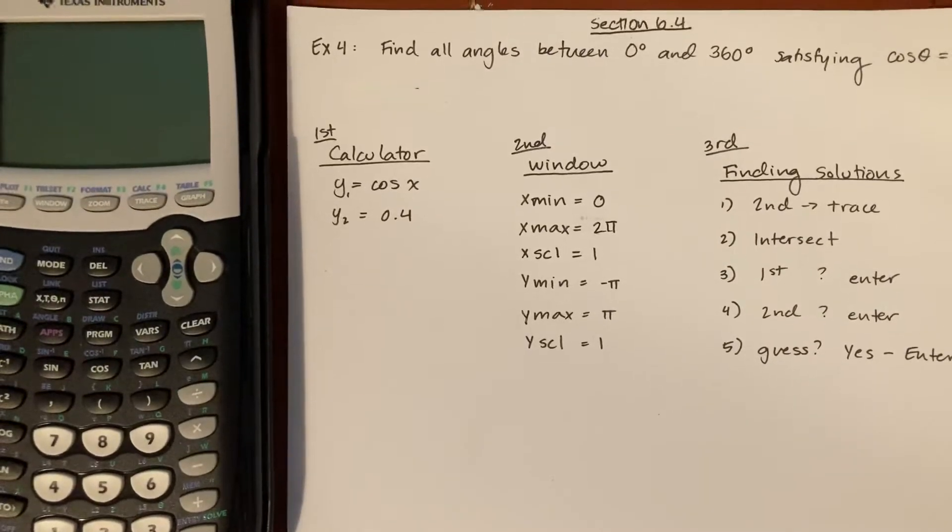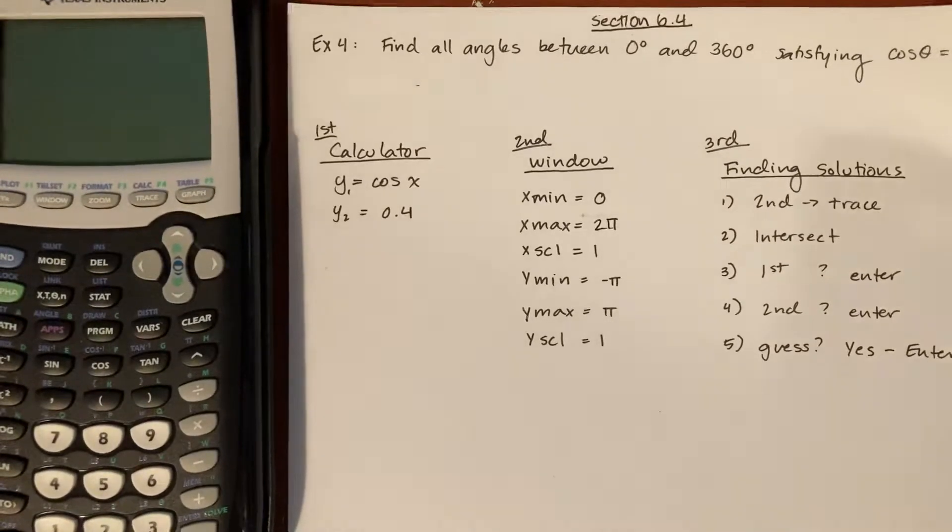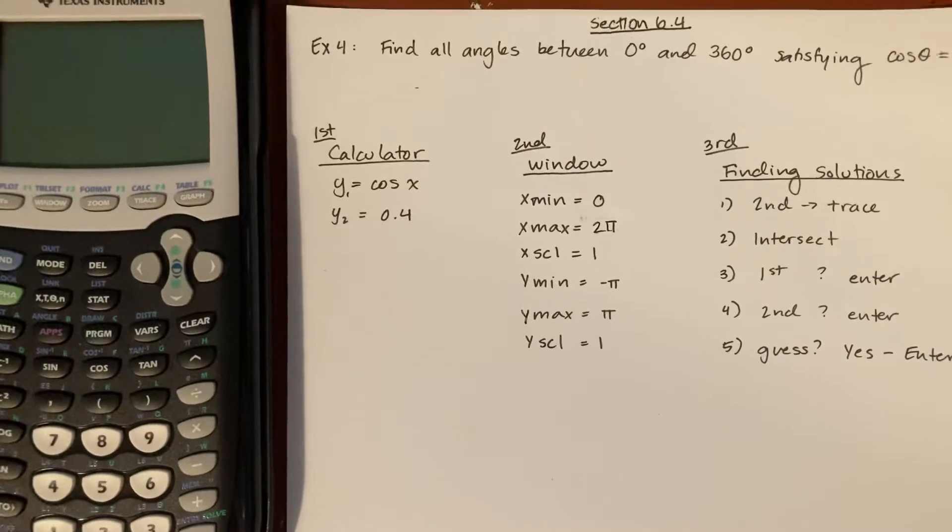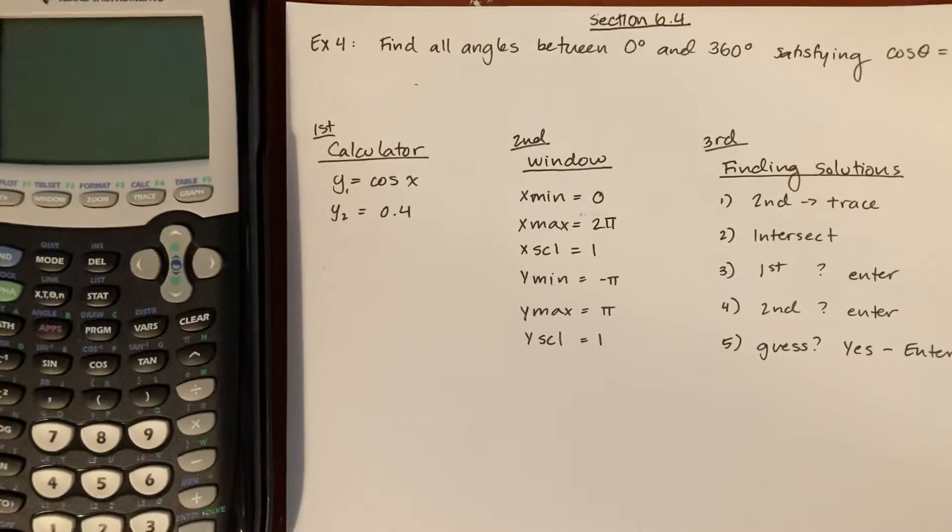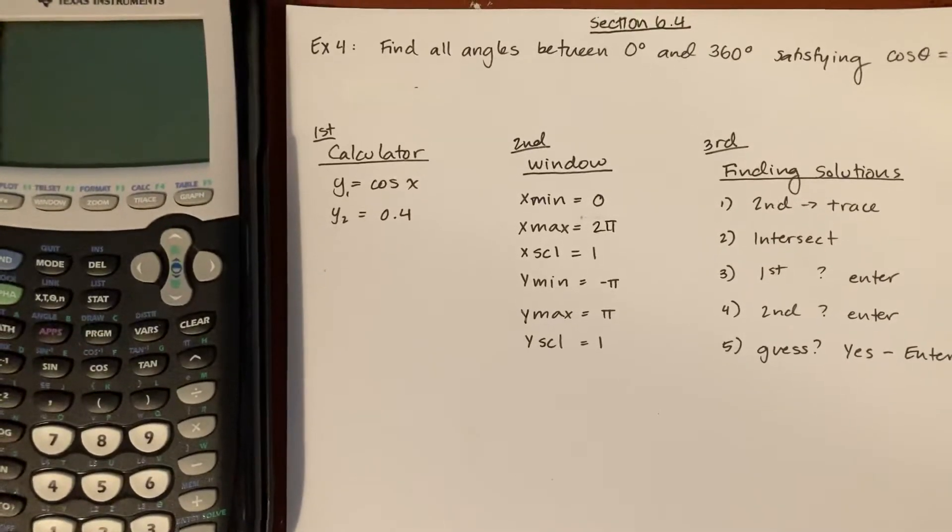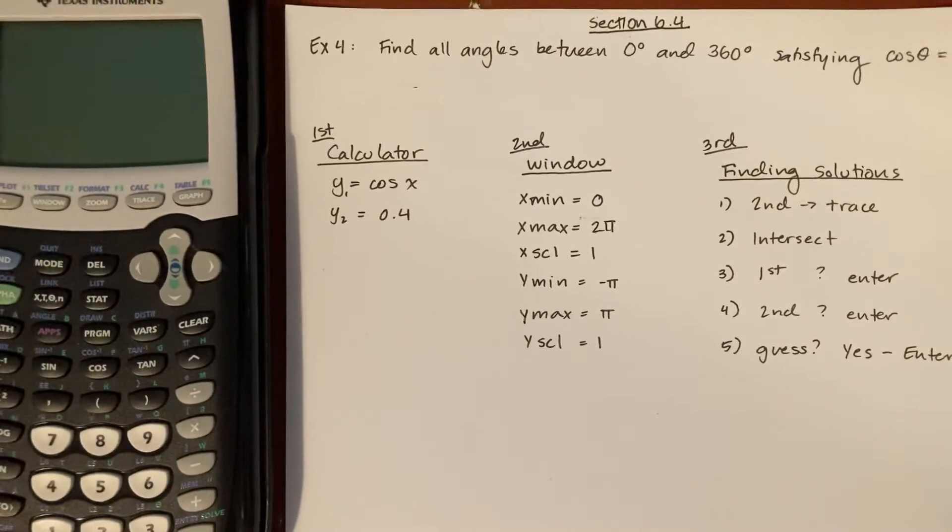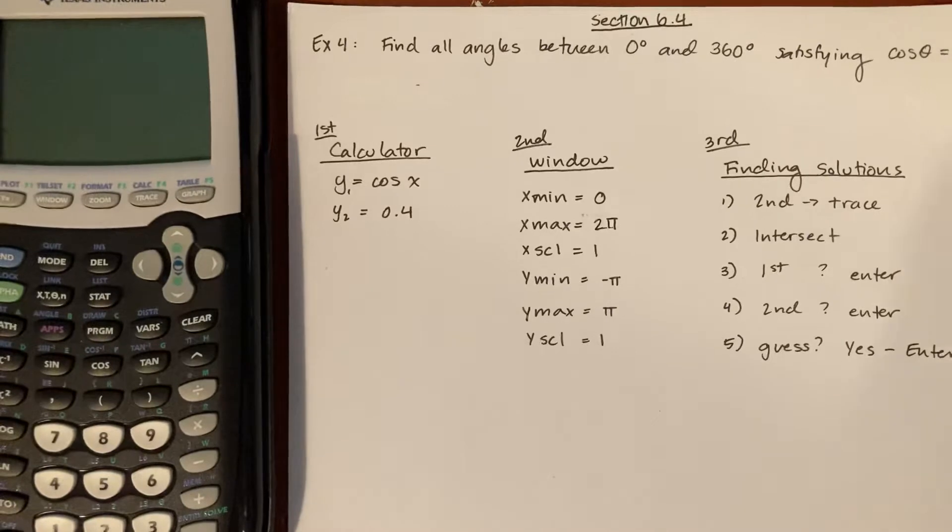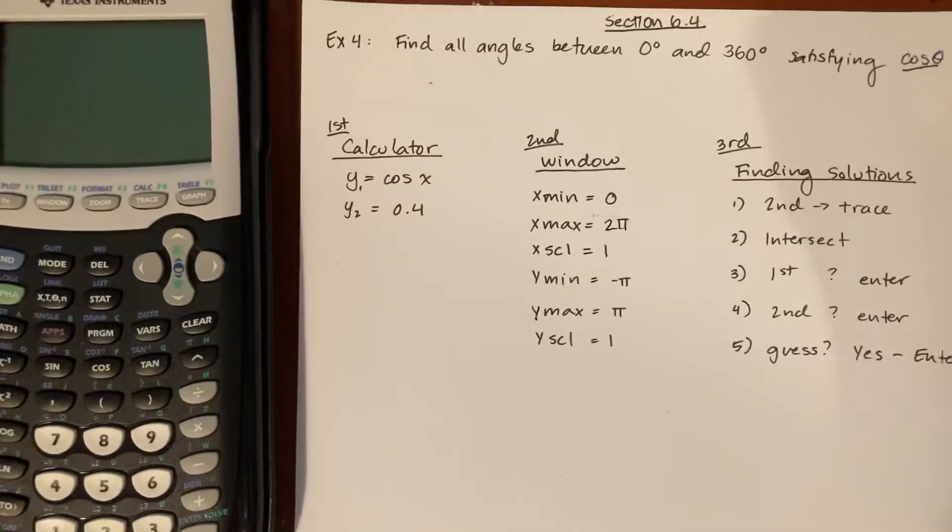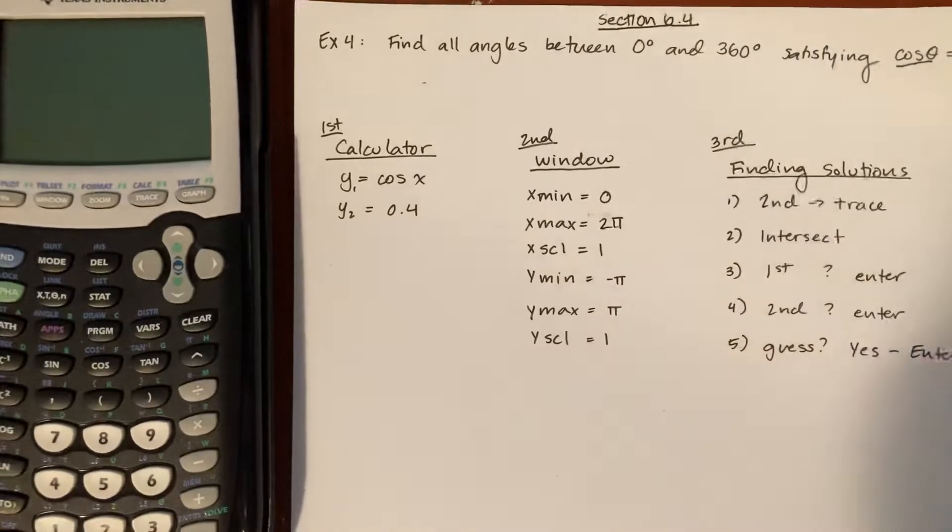y sub 1 equals cosine, and we're going to use x versus theta. A lot of students mentioned they had problems with that and I had forgotten to mention that in the video, so we're going to go ahead and do that. We're splitting it up into the two sides: cosine of theta and 0.4. So we go ahead and do that in my calculator.